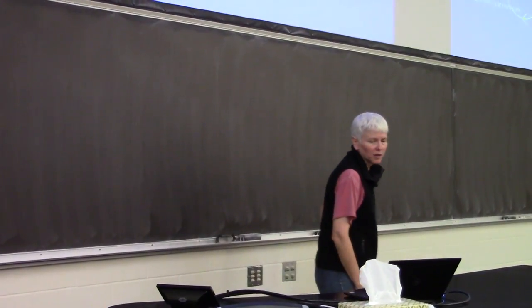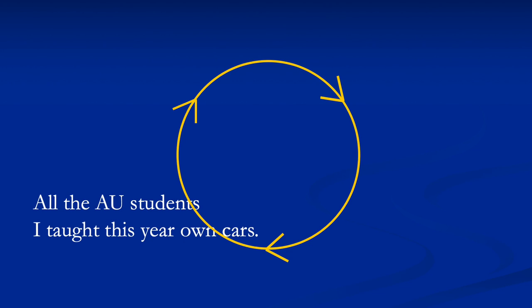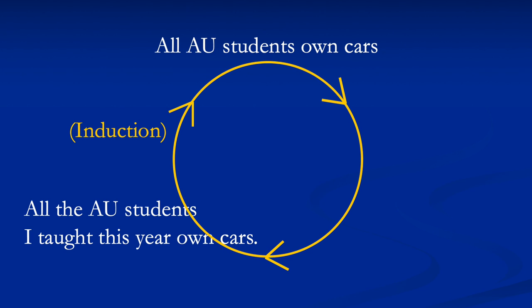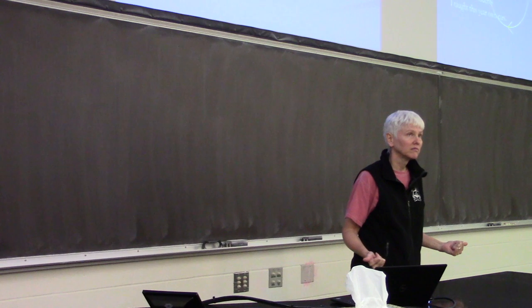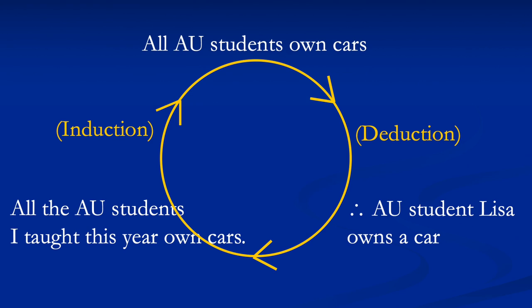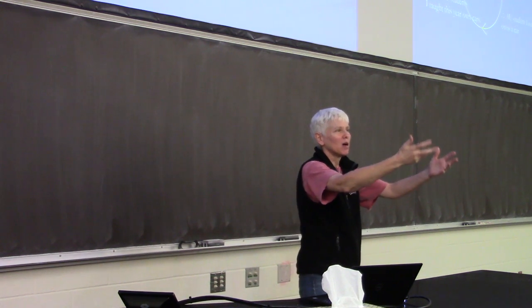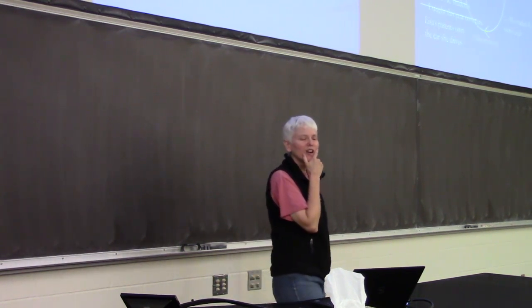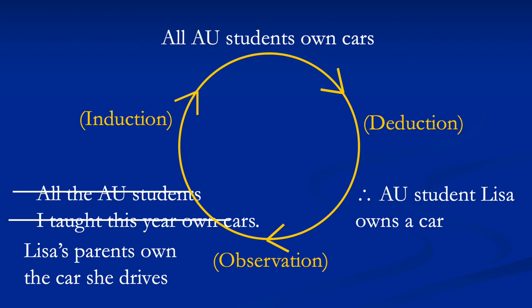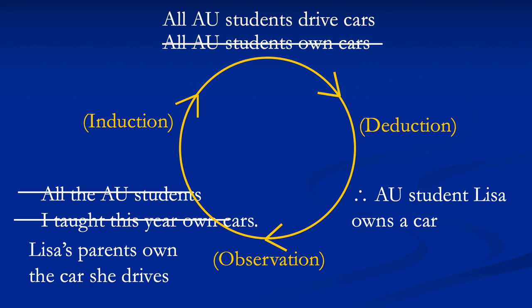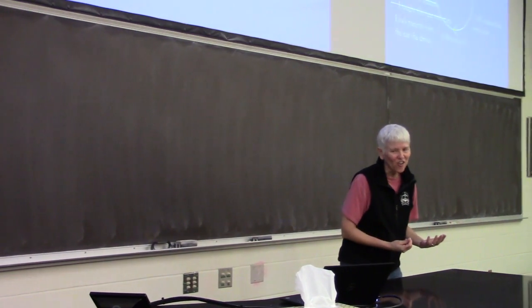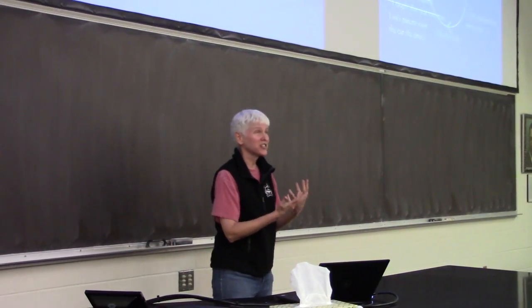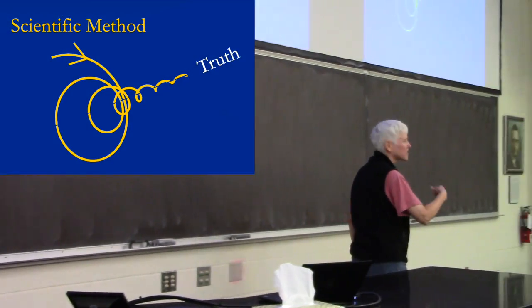Here's a cartoon example: by induction I infer all Andrews students own cars. From that I make a deductive prediction — Lisa is an Andrews student, therefore Lisa owns a car. I collect data about Lisa and find out it's her parents' car. So I revise my hypothesis and keep going around until my predictions match my observations to a sufficiently high degree. That's what science is.